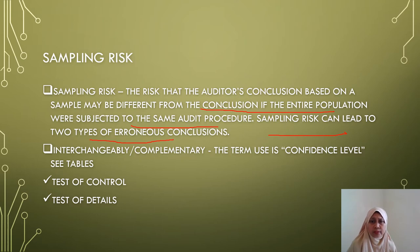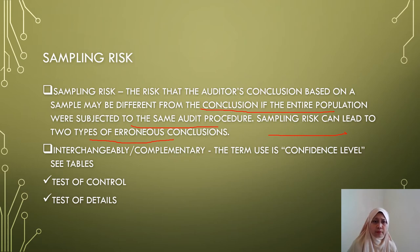Some books also use the term confidence level, which is complementary to the term sampling risk. A confidence level of 90% refers to a 10% sampling risk, while a confidence level of 95% refers to a sampling risk of 5%. There are two types of sampling: attribute sampling, which is used to test controls, and monetary unit sampling, which is used for testing detail balances.